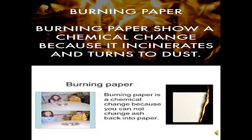Burning of paper is an example of a permanent chemical change. Now let's perform an activity: burning a piece of magnesium. Burning of paper is a chemical change because ash cannot be changed back into paper.